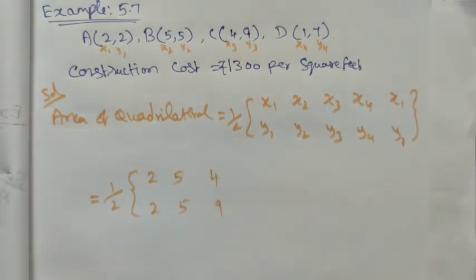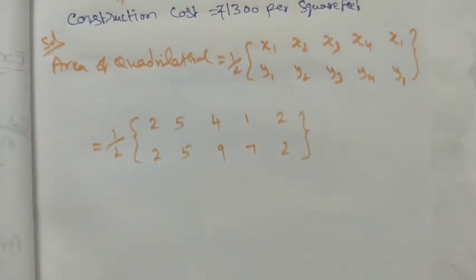x4 y4 is 1, 7, again x1 y1 is 2, 2. Now we want to multiply this term.